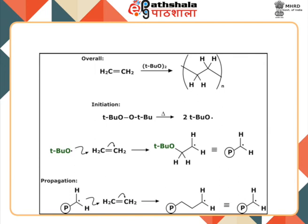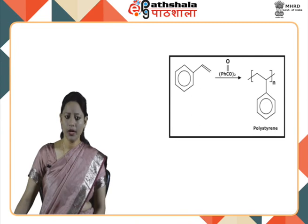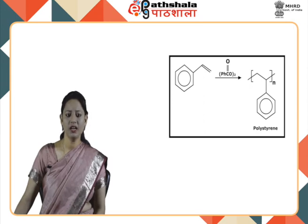Overall, when ethene polymerizes in the presence of a peroxide it gives polyethylene. Initiation involves homolytic cleavage in tertiary butyl peroxide to give a tertiary butoxyl free radical. This tertiary butoxide radical reacts with ethene to generate an alkyl radical. That alkyl radical further propagates the chain by reacting with another ethene molecule. This is how polymerization occurs in ethene. Another example of polymerization is the polymerization of styrene to polystyrene, which can also occur via a free radical mechanism.